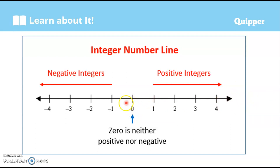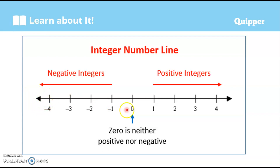To the left of zero, we have the negative integers or the negative numbers. So we have negative 1, negative 2, negative 3, negative 4, and so on, indicated by this arrowhead. Zero is neither positive nor negative — zero has no sign. Again, to the right of zero, those are positive integers. To the left of zero, those are negative integers.